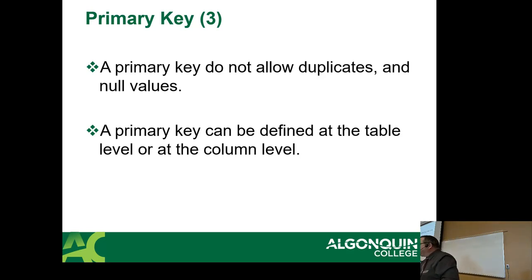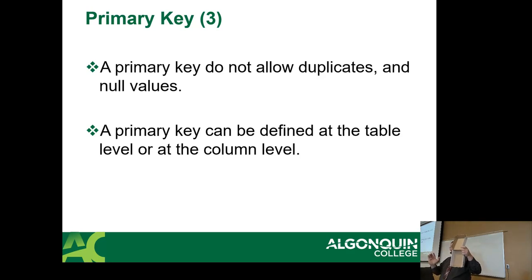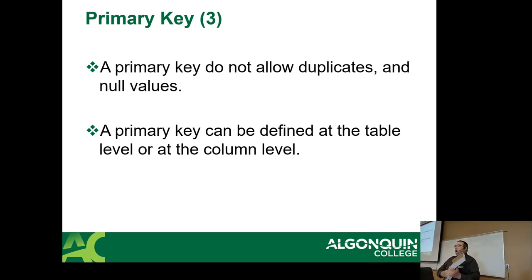You could theoretically have one empty value as a primary key once, but you can never do it twice because then it's duplicated. Picture two empty boxes — if I ask you to pick the one on the left but you can only use it by describing the value inside, you can't distinguish which one I want because both are empty. You can never have duplicate values because you can never find them uniquely, and you can't have nulls because there's no way to tell the database something is actually there.